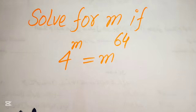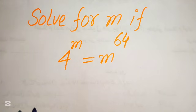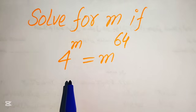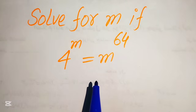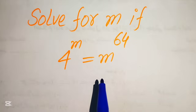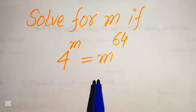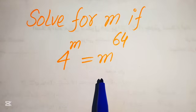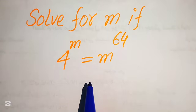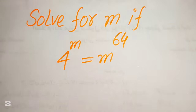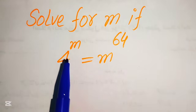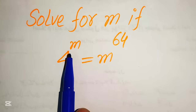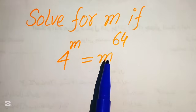Our target is to move the variable terms to the right hand side and move the constant terms to the left hand side. So first we move this variable term m to the right hand side.